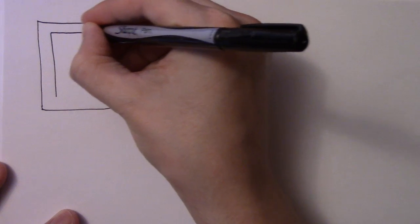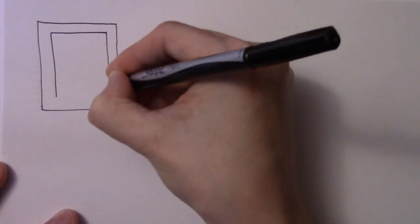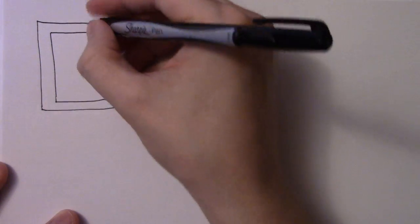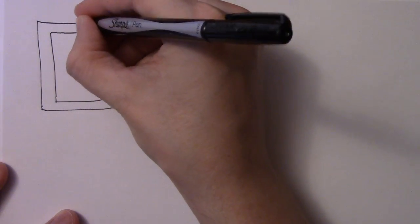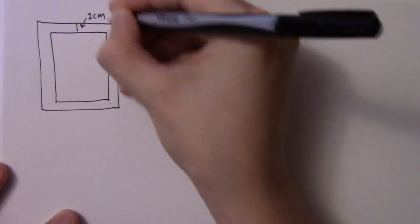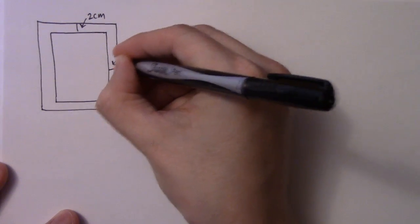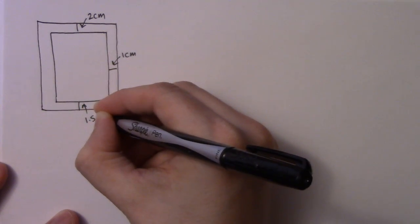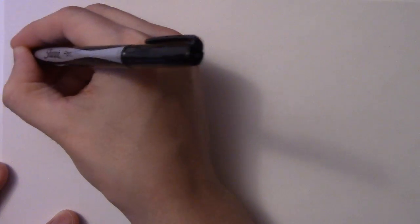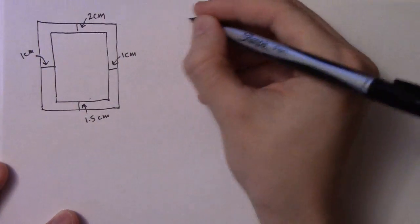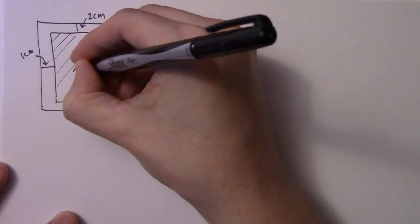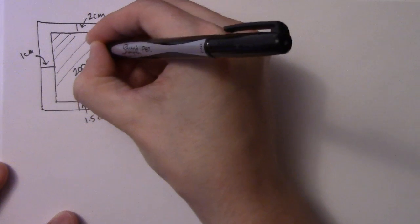Then we have some type of border going around the poster and I'm going to make the border not uniform. So I'm going to call that 2 centimeters, I'm going to call this 1 centimeter, call this 1.5 centimeters, and I'll call this 1 centimeter as well. And I'm going to call this printed area in here 200 centimeters squared.